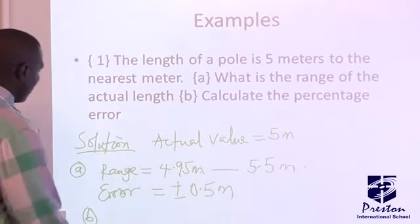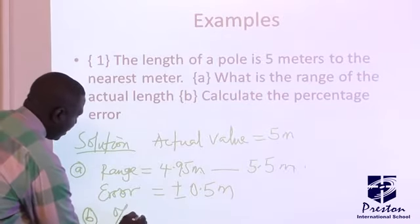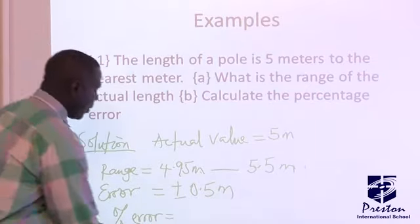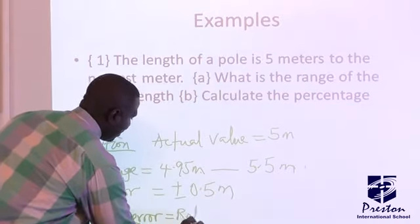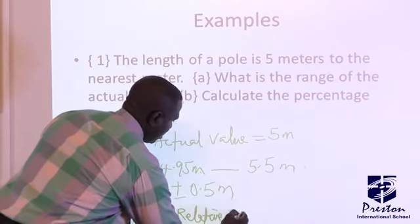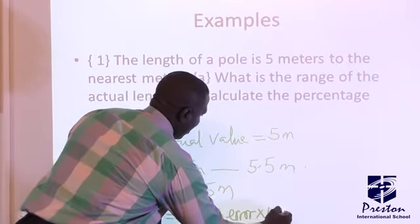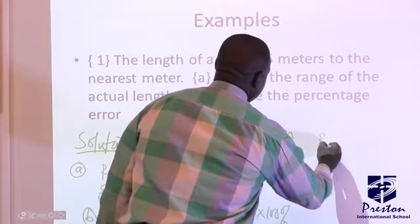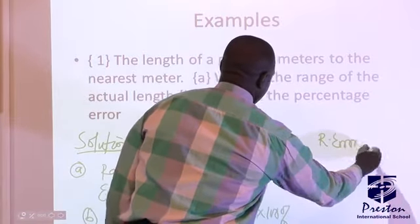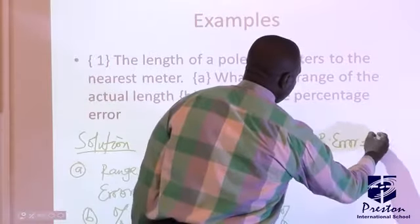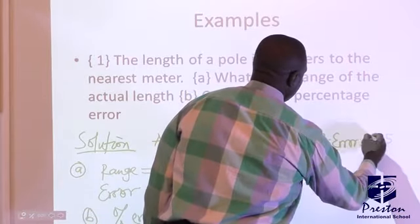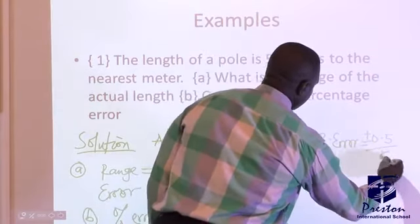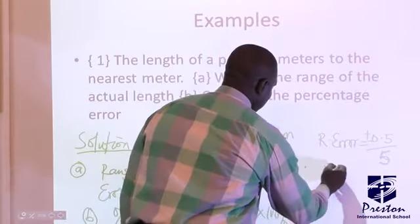Part B. Your percentage error now, from that formula, percentage error is relative error multiplied by 100. So, for you to get your relative error, your relative error is the error which is plus or minus 0.5 all over actual value 5. This is your relative error. Now, you multiply by 100 to get your percentage error.